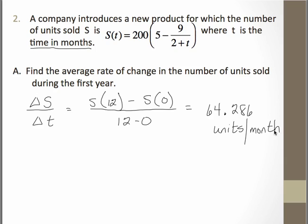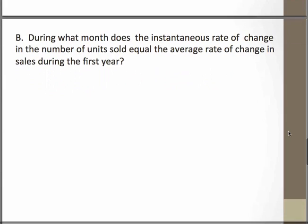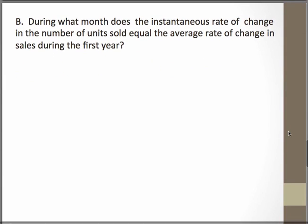So this is telling us since it's positive, the rate of change is obviously increasing at a rate of 64, just over 64 units per month. So that's a good thing. It means they're selling more and more every month. Now the next question, again, including the mean value theorem, is asking us when it is during that first year that the instantaneous rate of change is going to equal the average rate of change and the number of units sold.